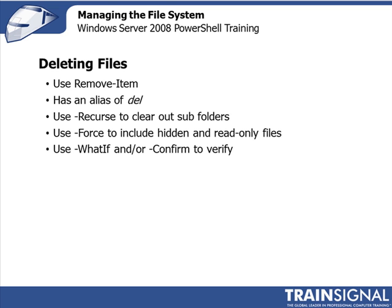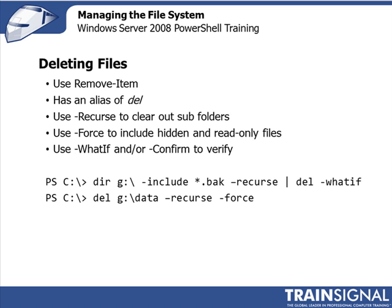At the very least, make sure you have a backup before you go and start deleting files. Here's how the command would look: I can do a directory of my G drive, searching for all the BAK files recursively, and then delete every backup file that I find — or actually just look to see what I would delete by using -WhatIf. If I ran that command without -WhatIf, it would have deleted all of the backup files on the G drive — a very handy tool if you're trying to do a little cleanup on one of your file servers. Or if I want to delete an entire directory, I can just run the del command, specify the path to the folder, and use -Recurse and -Force to delete all subfolders and all data from G:\Data.